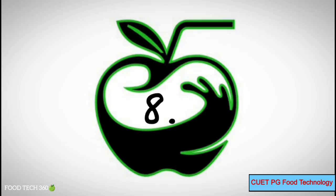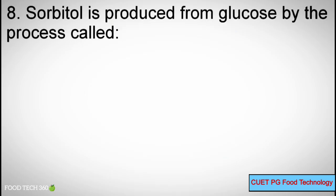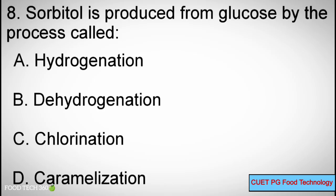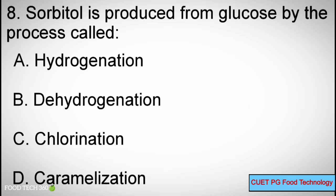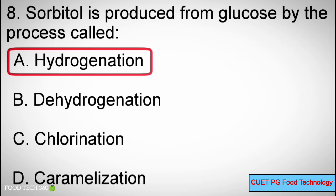Q8: Sorbitol is produced from glucose by a process called? A. Hydrogenation, B. Dehydrogenation, C. Chlorination, D. Caramelization. Correct answer: A. Hydrogenation.